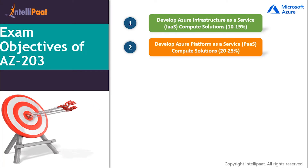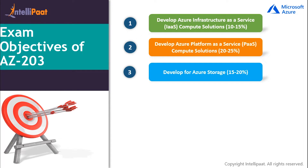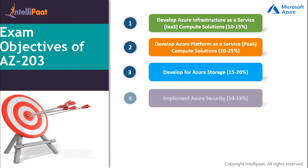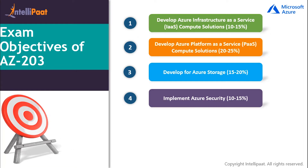The third module is Developing Azure Storage, holding a weightage of 15 to 20 percent, covering topics like developing solutions that use Blob Storage, Relational Database, Cosmos Database Storage, and Storage Tables. The fourth module is Implementing Azure Security, holding a weightage of 15 to 20 percent, covering topics in implementing access control, authentication, and secure data solutions.